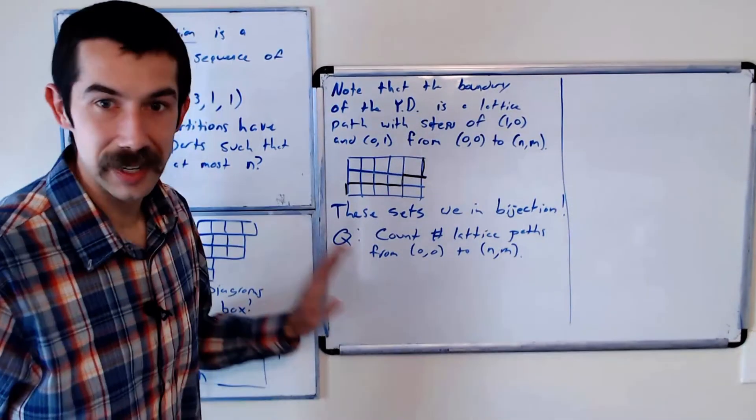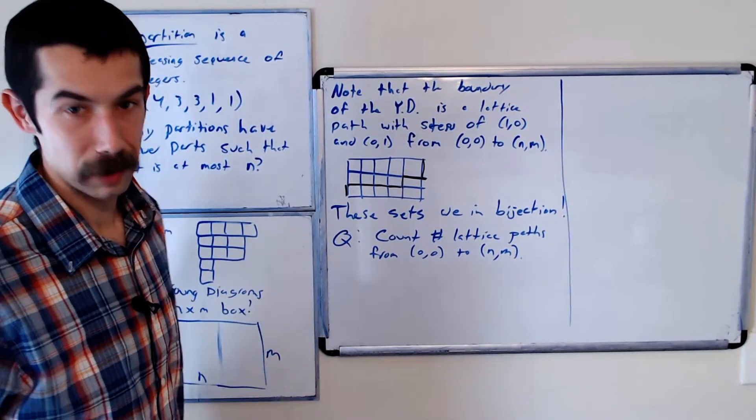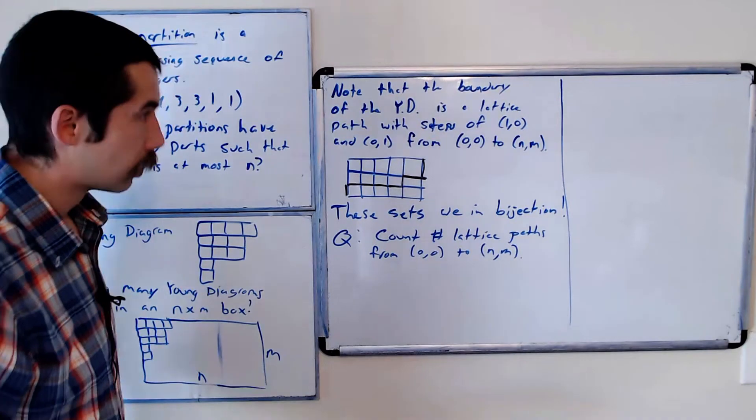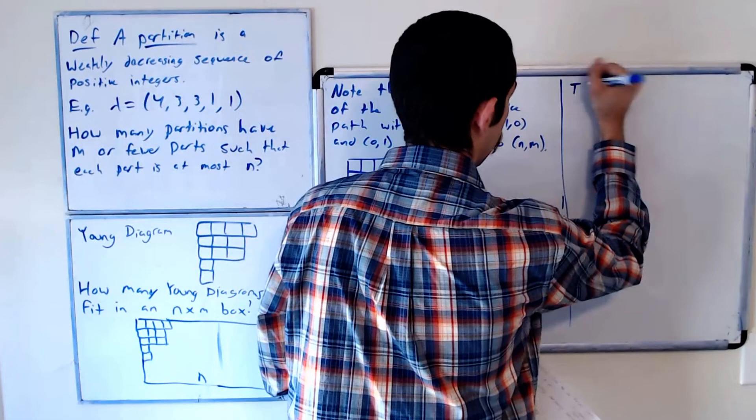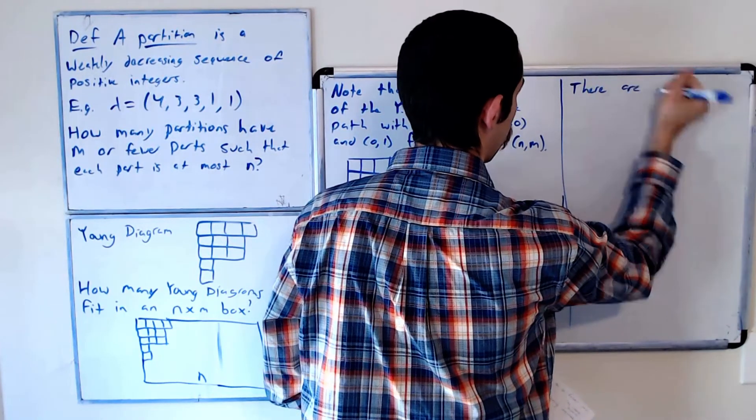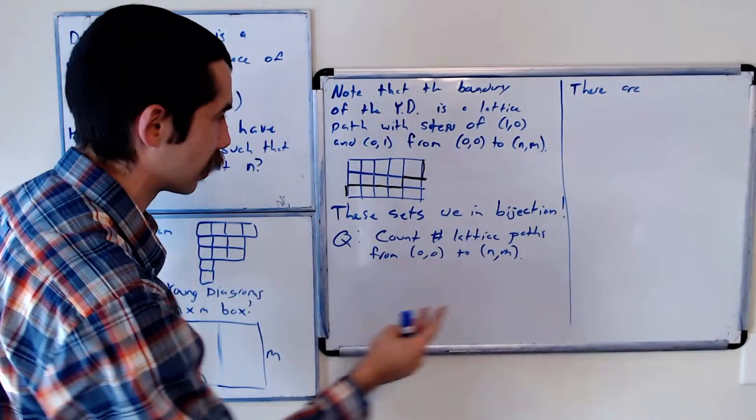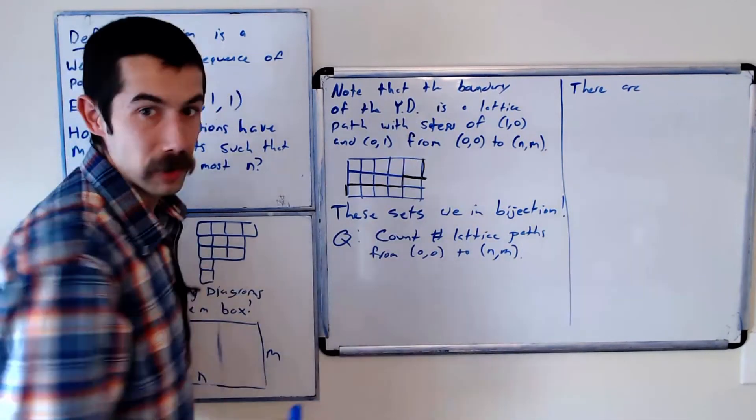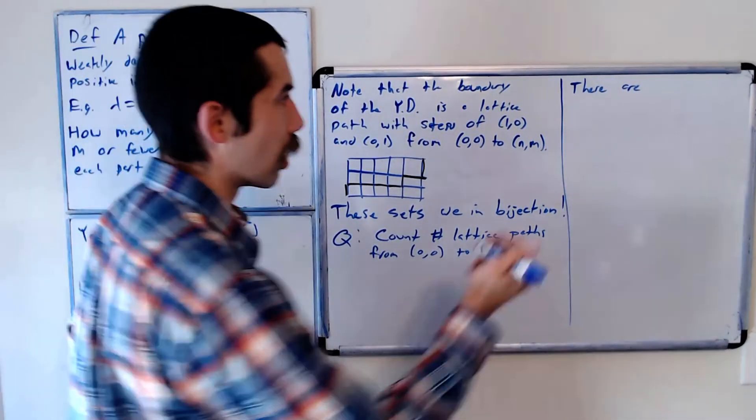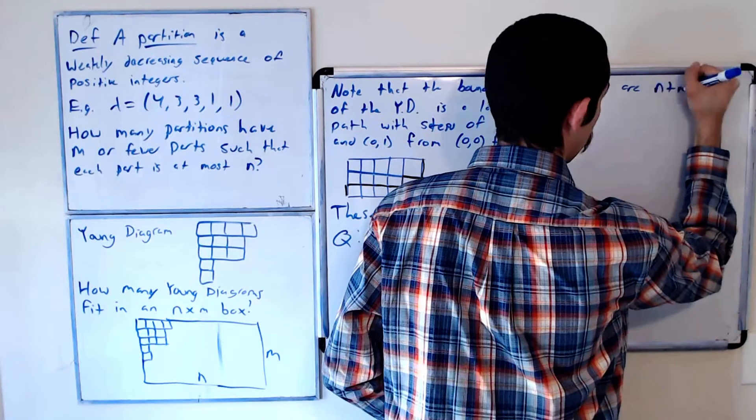Believe it or not, this is a super easy combinatorics question. How many total steps does each lattice path have? Well, you need N of them east and M north, no matter what. So there are N plus M total steps.